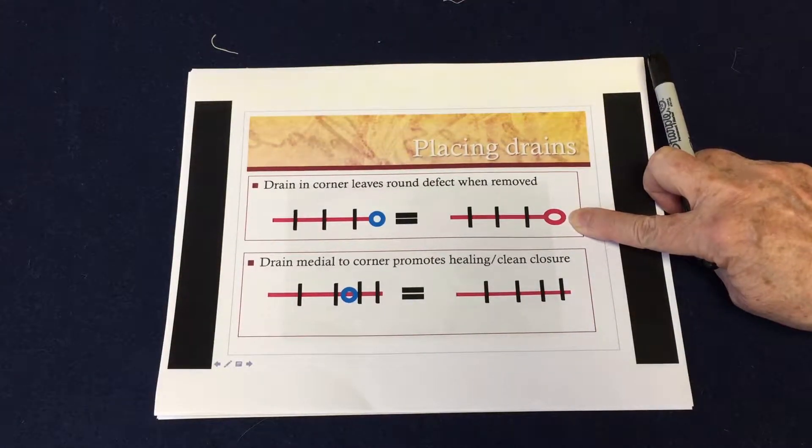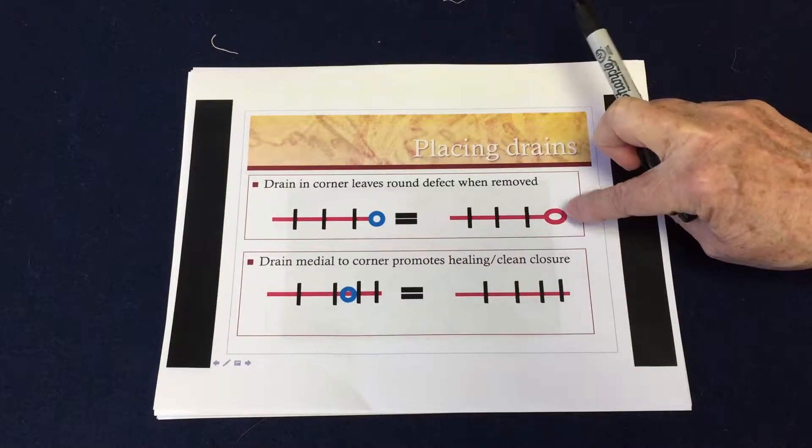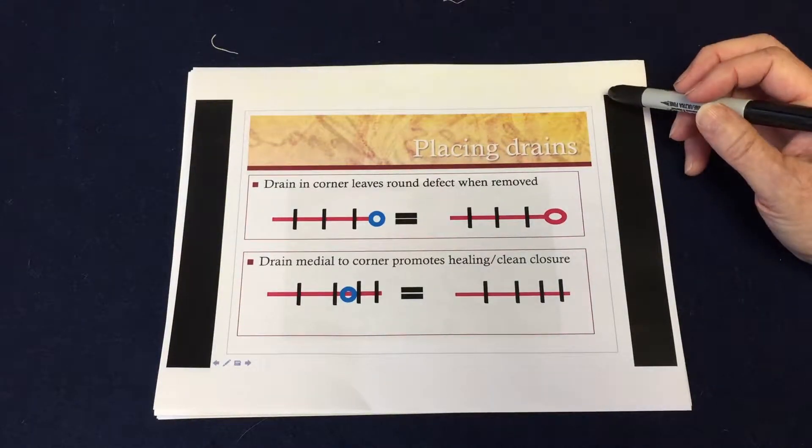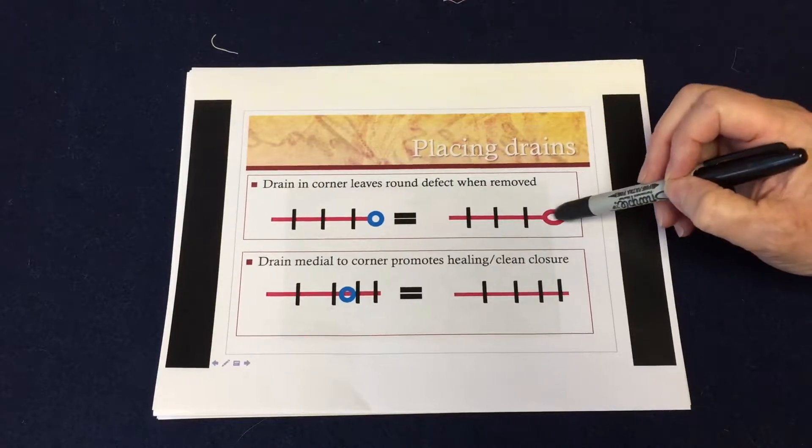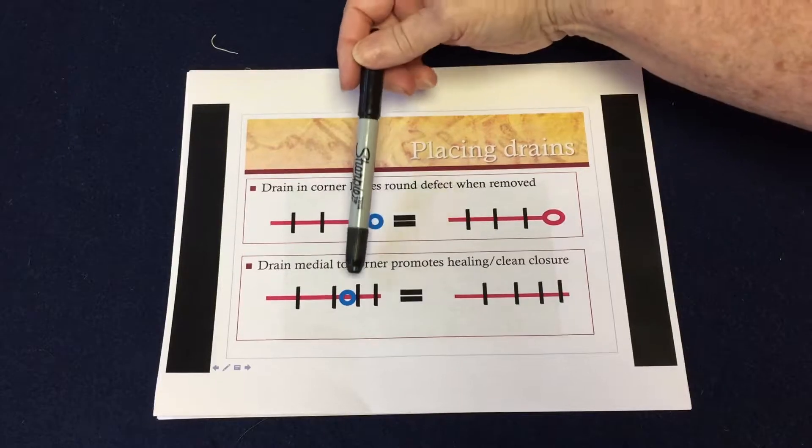You end up with a round hole at the corner of your incision. Round holes with nothing to close it or hold it closed on this side do not tend to close that well on the human body, so they might end up with a little bit more of a scar on this one.